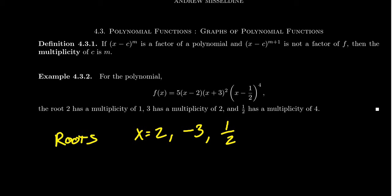Now we describe the multiplicities of these roots. Looking at (x − 2), it shows up exactly once, so the multiplicity of root 2 is 1. The factor (x + 3) corresponds to the root −3, and this factor shows up 2 times, so the multiplicity of −3 is 2. Finally, (x − ½) to the fourth tells us ½ is a root, and it shows up 4 times in the factorization, so the multiplicity of ½ is 4.